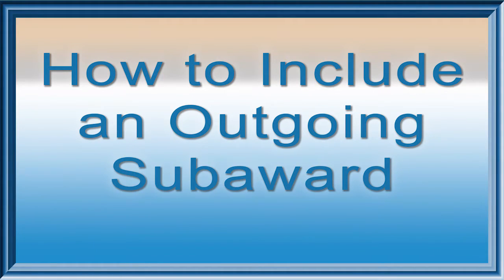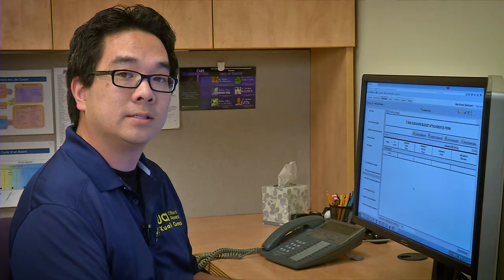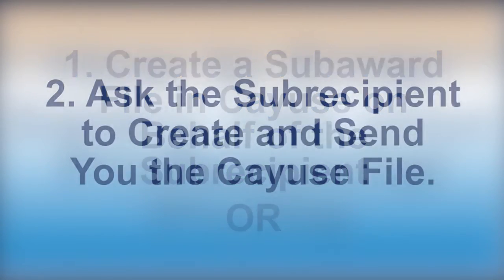This section explains how to include an outgoing subaward in your proposal. What is an outgoing subaward? It's when you transfer a portion of the scope of work to another entity. There are two ways to include a subaward in your proposal: you can either create the subaward file on behalf of the subrecipient, or you can ask them to create the file and send it to you.